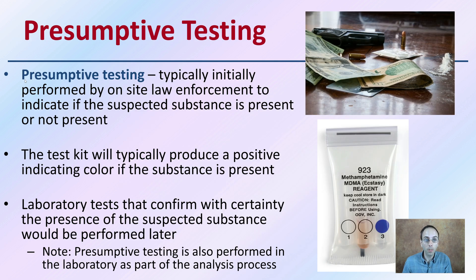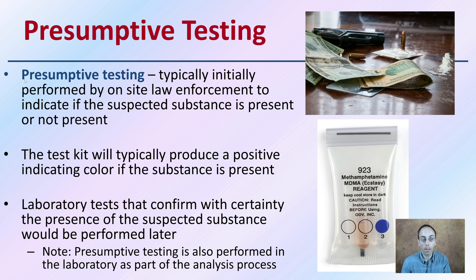Presumptive testing is typically initiated by law enforcement or those first on the scene, and they indicate if the suspected substance is present or not present. A test kit will typically produce a positive indicating color if the substance is present. We see right next to me here a testing reagent for ecstasy. Laboratory testing that confirms with certainty the presence of the suspected substance would be performed later.